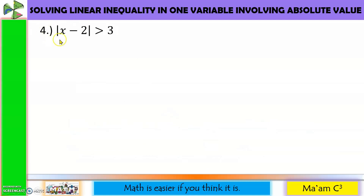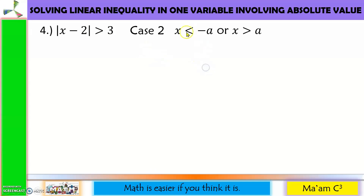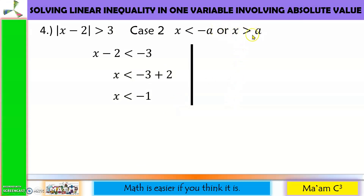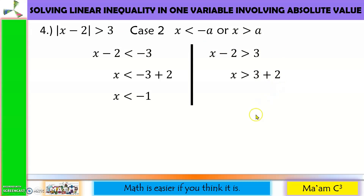Next: the absolute value is greater than 3 — this is Case 2. For Case 2, we form the union of two inequalities. First: x minus 2 less than negative 3, so moving negative 2 to the other side gives x less than negative 1. Second: x minus 2 greater than 3, so moving negative 2 gives x greater than 5. Set builder notation: x less than negative 1, union x greater than 5.